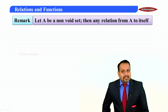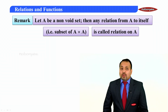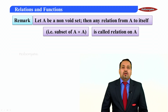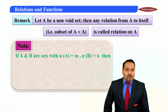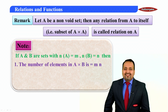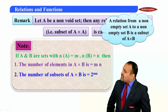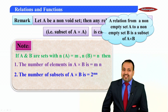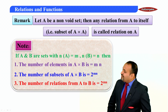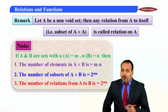An important remark: let A be a non-empty set. Then any relation from A to itself — that is, any subset of A cross A — is also called a relation on A. Key points to remember: if n(A) = m and n(B) = n, then n(A cross B) = mn. The number of subsets of A cross B is 2^(mn). Since any subset of the cross product is always a relation, the number of relations from A to B is 2^(mn).